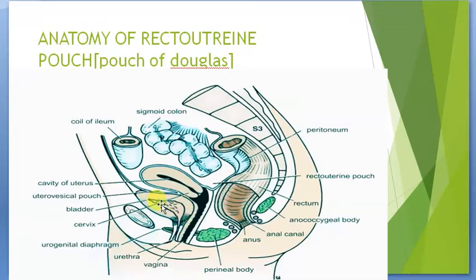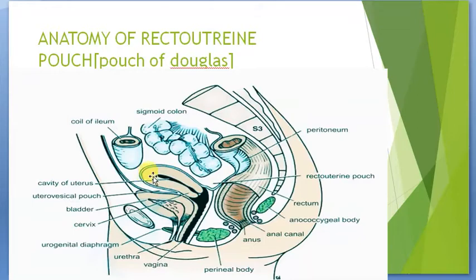We have the urinary bladder and the urethra, which in females is quite small. Then we have the vagina, which is connected to the uterus through the cervix — the smaller, lower part of the uterus. The uterus is the part of the female reproductive system where the embryo gets implanted and most of the development of the embryo and fetus occurs. We also have the rectum, which opens to the exterior through the anal canal. Here we see the parietal peritoneum.